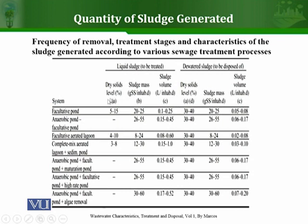For these same pond and lagoon systems, you can see the liquid sludge properties and the dewatered sludge properties — including the level of dry solids, sludge mass, and volume for both the liquid sludge and the dewatered sludge. We will not go into the details of all these parameters.